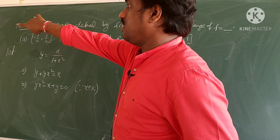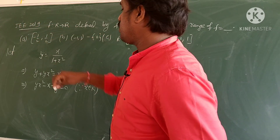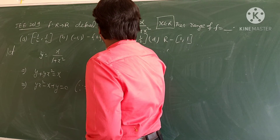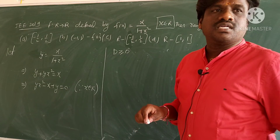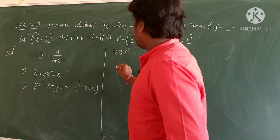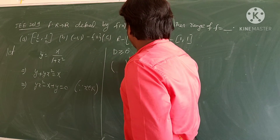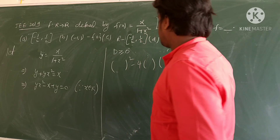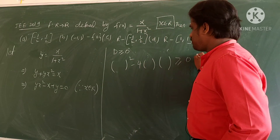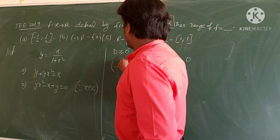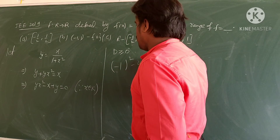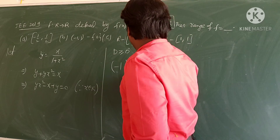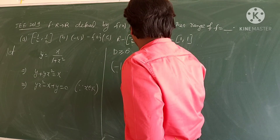For x to be real, the discriminant b² - 4ac ≥ 0. Here a = y, b = -1, c = y, so we get 1 - 4y² ≥ 0.